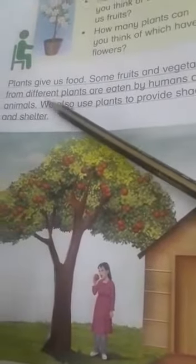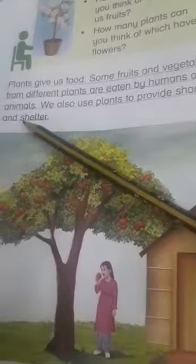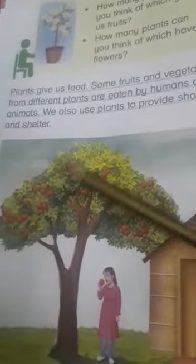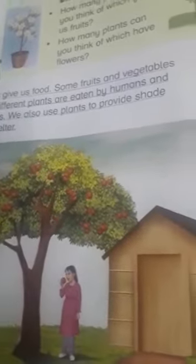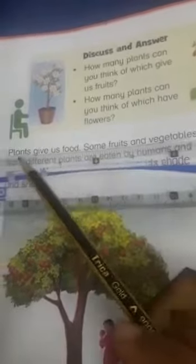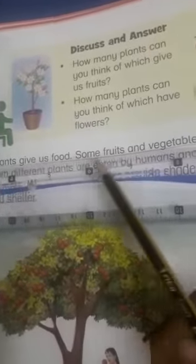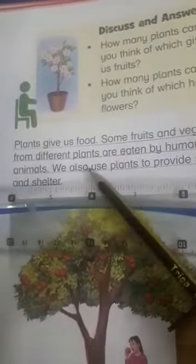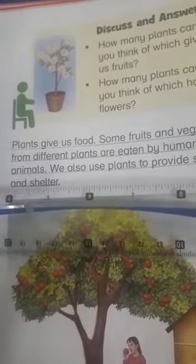Plants give us food. Some fruits and vegetables from different plants are eaten by humans and animals. We also use plants to provide shade and shelter. Now students, underline these three lines with the help of a scale.